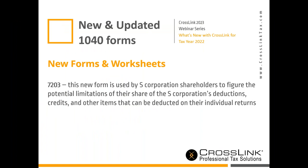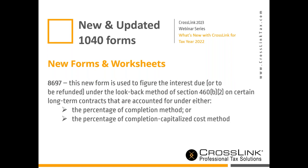Next, we have new forms and worksheets. A new form for this tax season is Form 7203, used by S corporation shareholders to figure the potential limitations of their share deductions within an S corporation. We also have Form 8697, which deals with figuring out interest due for look-back methods pertaining to Section 460 on any long-term contracts. Both have been added to the software for this tax season.